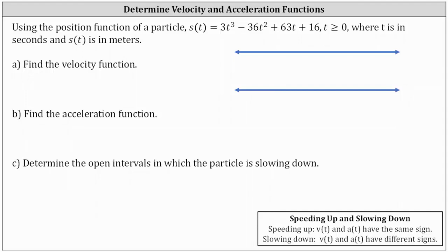Part A: we're asked to find the velocity function. The velocity function is equal to the derivative of the position function, where v of t is equal to s prime of t, which is equal to the derivative of three t cubed minus 36 t squared plus 63 t plus 16 with respect to t.